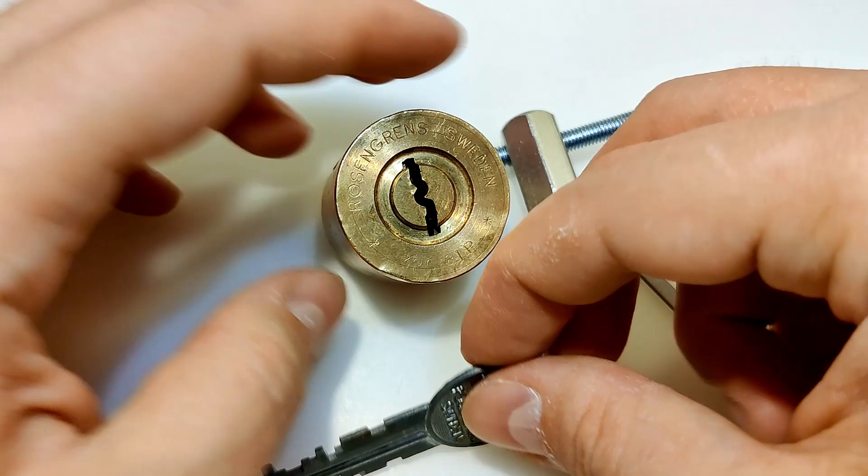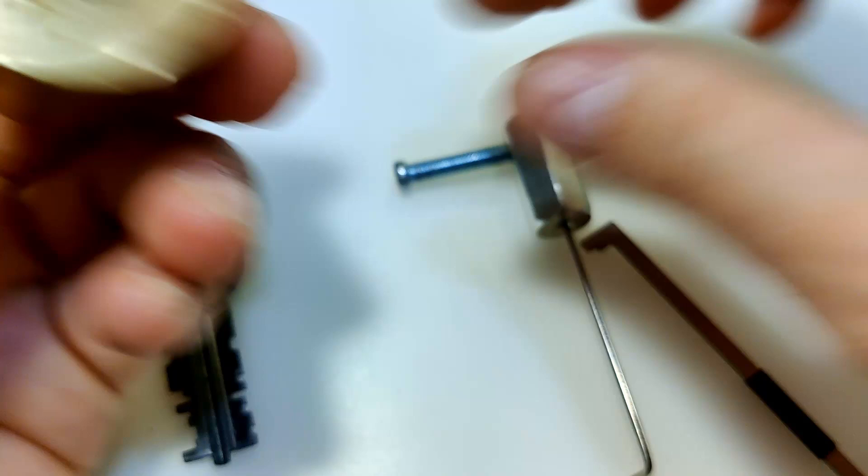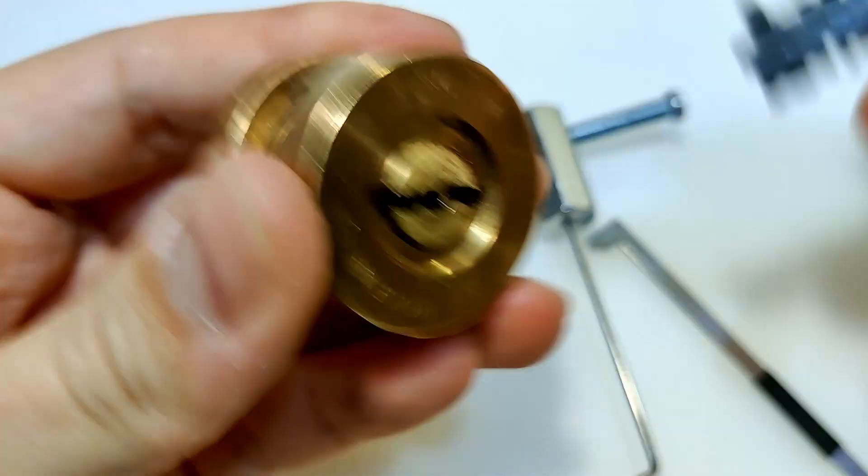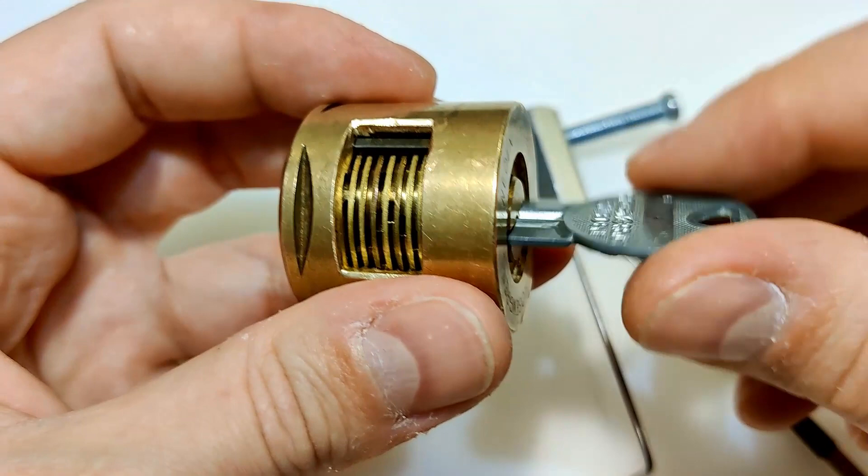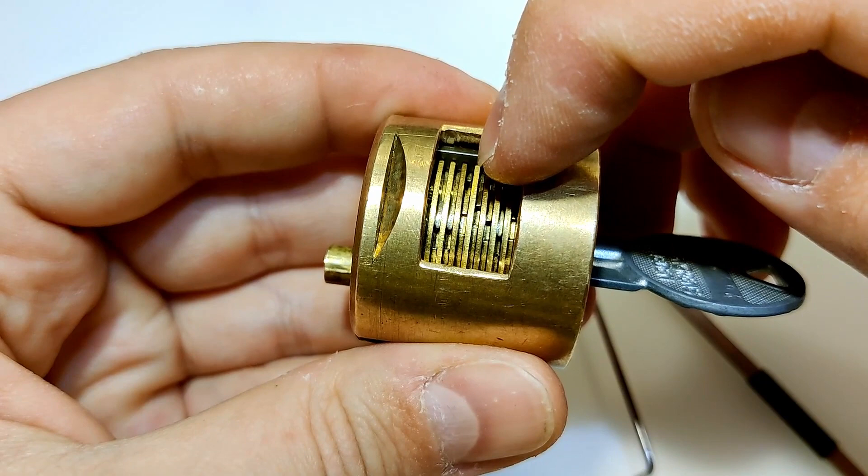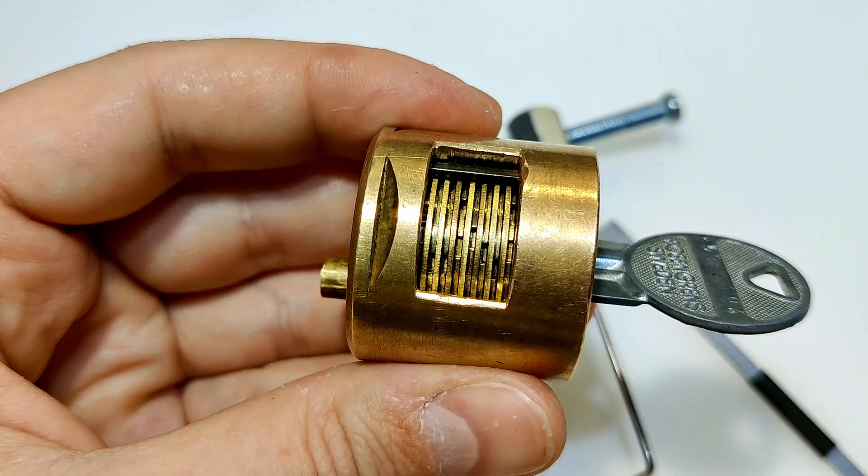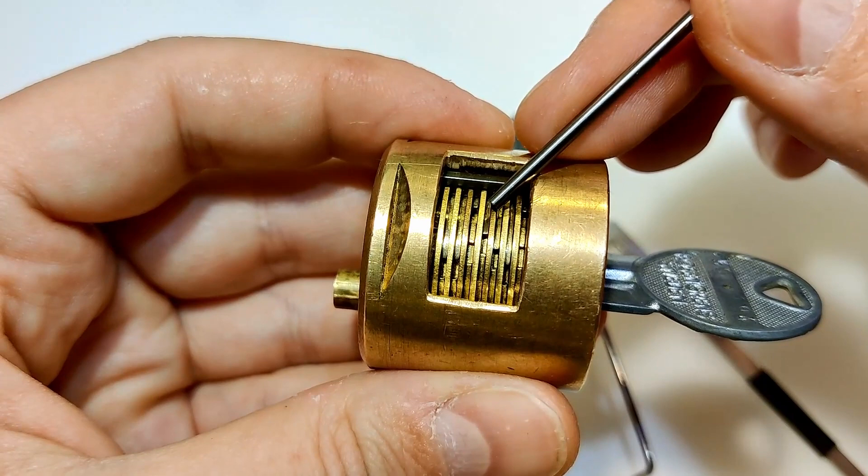I made a cutaway lock so you can see here all the disks and you can see how it works. So let me put the key in. You put the key in and then you rotate. Once the disk there, that disk, it's not a disk, it's a spacer. The disks are here. You can see false gates in between and true gate, true gate, true gate, some here, here, true gate.